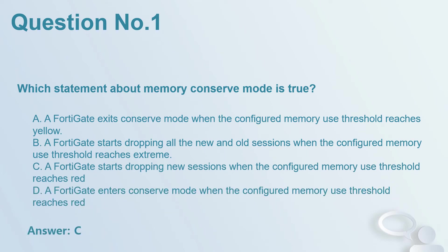Question number 1: Which statement about memory conserve mode is true? A. A FortiGate exits conserve mode when the configured memory use threshold reaches yellow. B. A FortiGate starts dropping all new and old sessions when the configured memory use threshold reaches extreme. C. A FortiGate starts dropping new sessions when the configured memory use threshold reaches red. D. A FortiGate enters conserve mode when the configured memory use threshold reaches red. Answer: C.